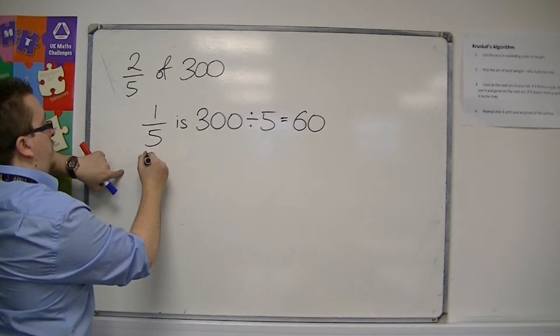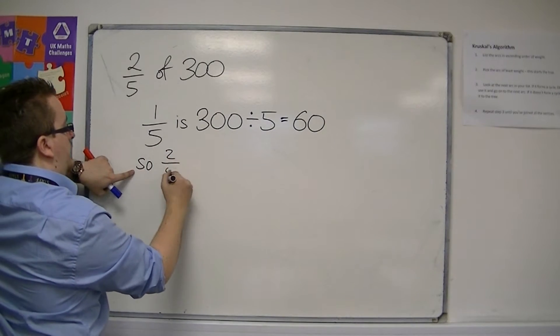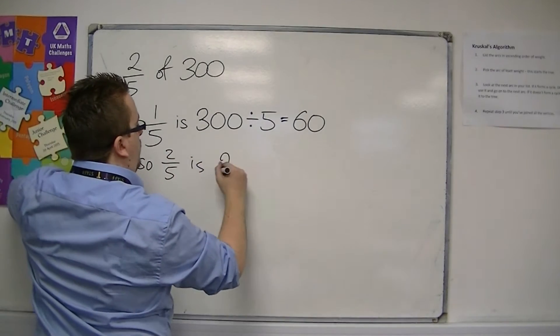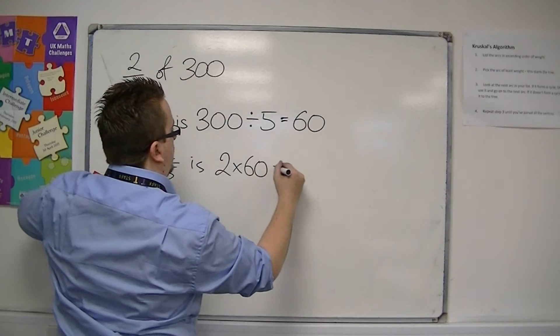And then, so two-fifths is two lots of 60. So 120.